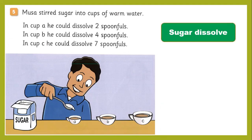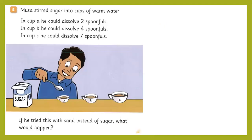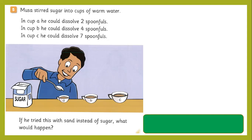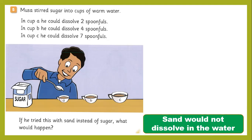The sugar will dissolve very quickly in the warm water. Now what would happen if Musa used sand instead of sugar? As you know, sand can't dissolve in water — you can find it sitting at the bottom of the glass.